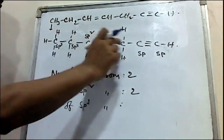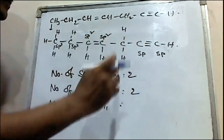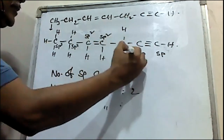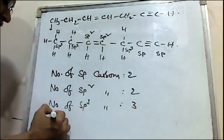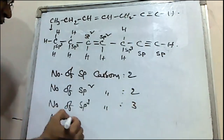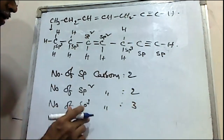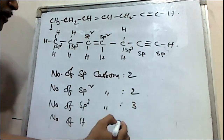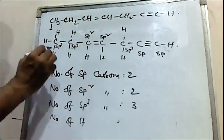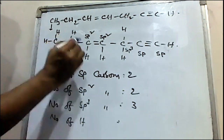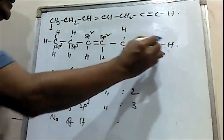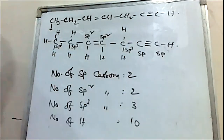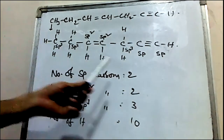So there are 3 sp3 carbons in the molecule. The total number of hydrogens counted is 1, 2, 3, 4, 5, 6, 7, 8 — about 10 hydrogens total.